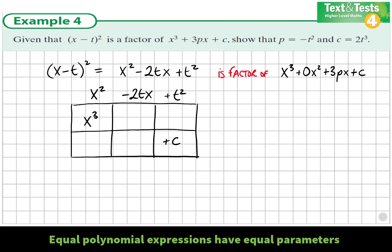Let's start dividing. x² goes into x³ x times. Now multiply: x by -2tx is -2tx². And x by t² is t²x. Now divide t² into c. So c divided by t², that's what it is.